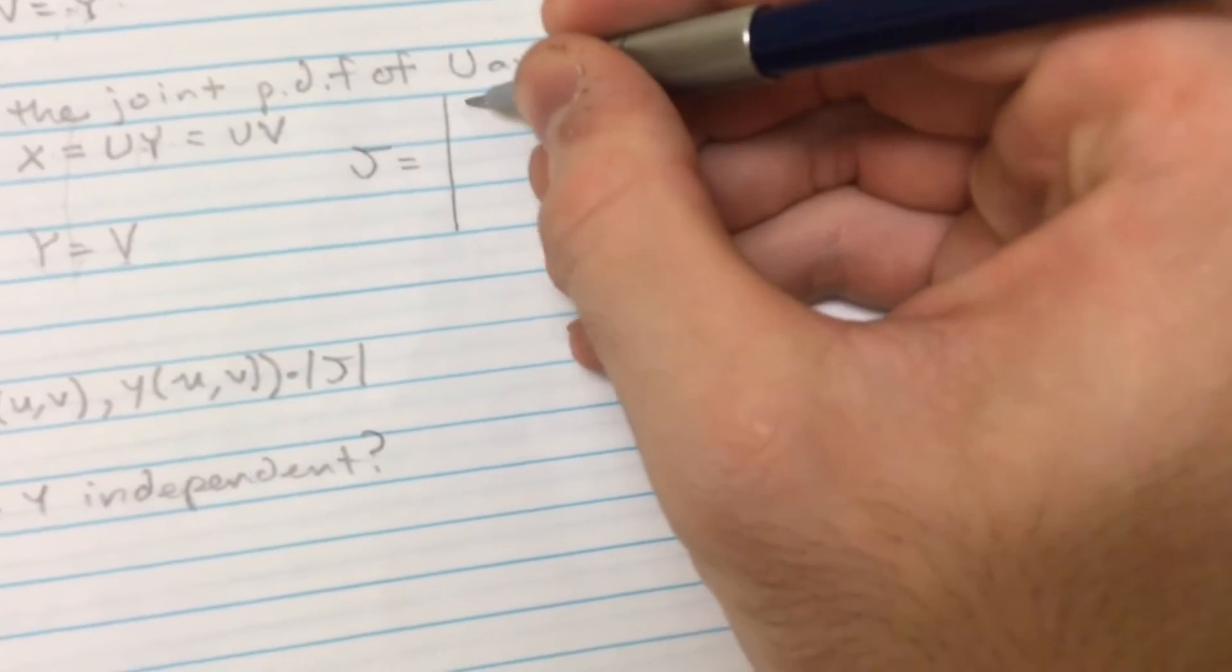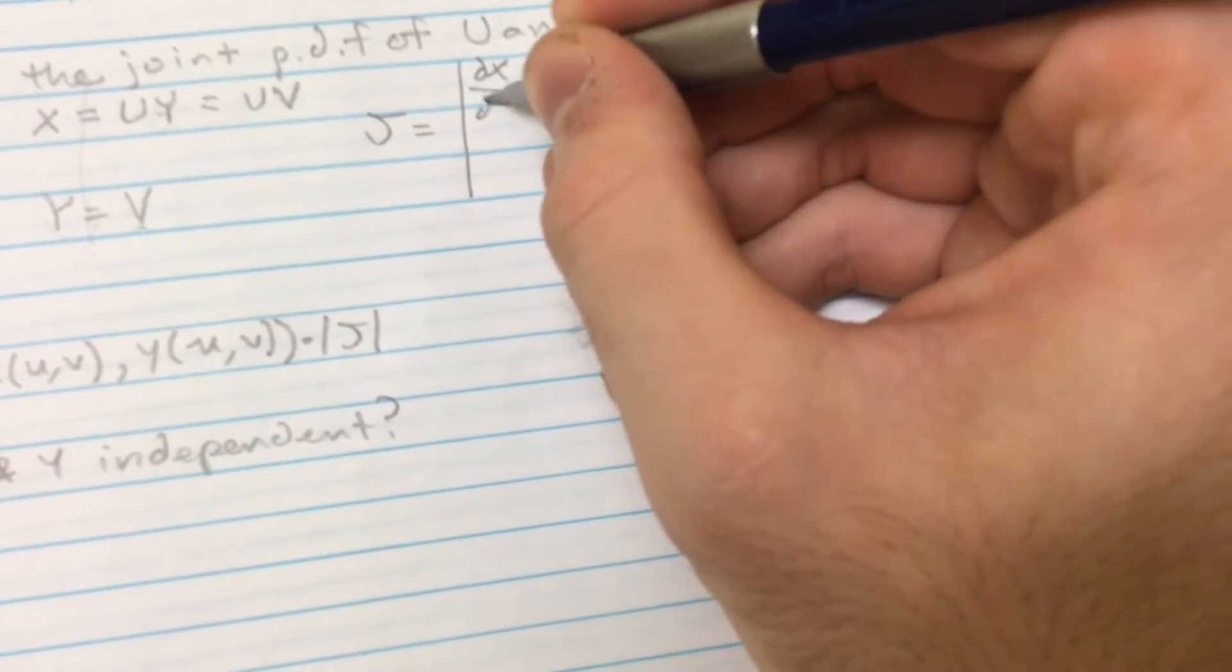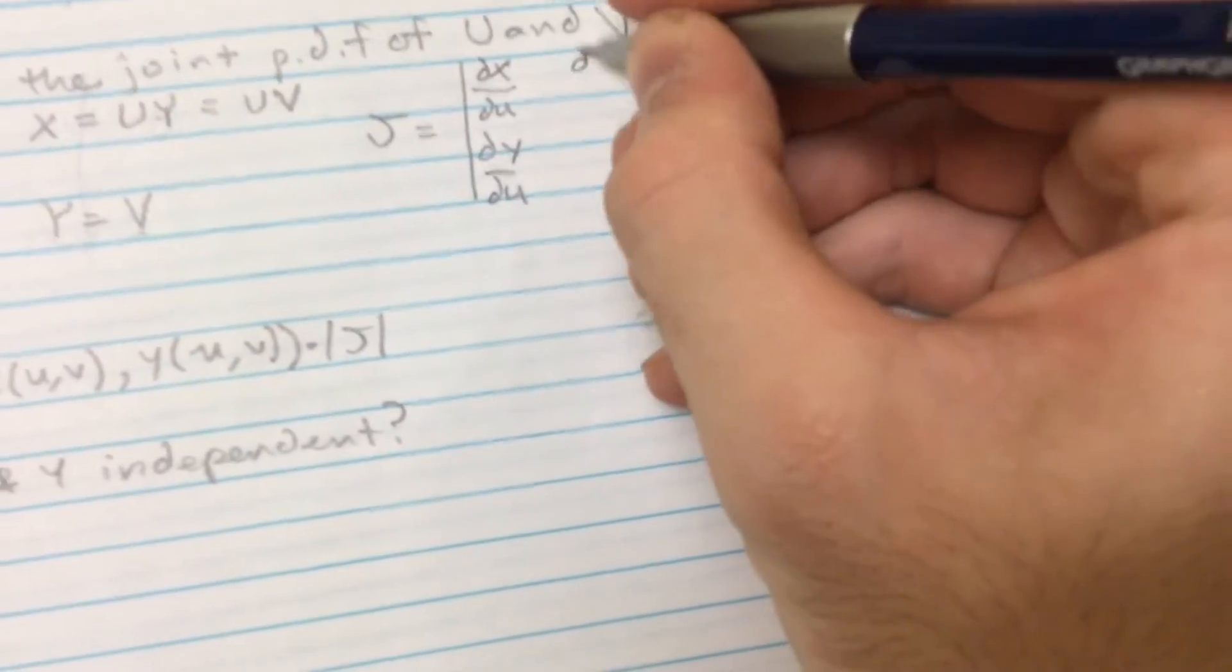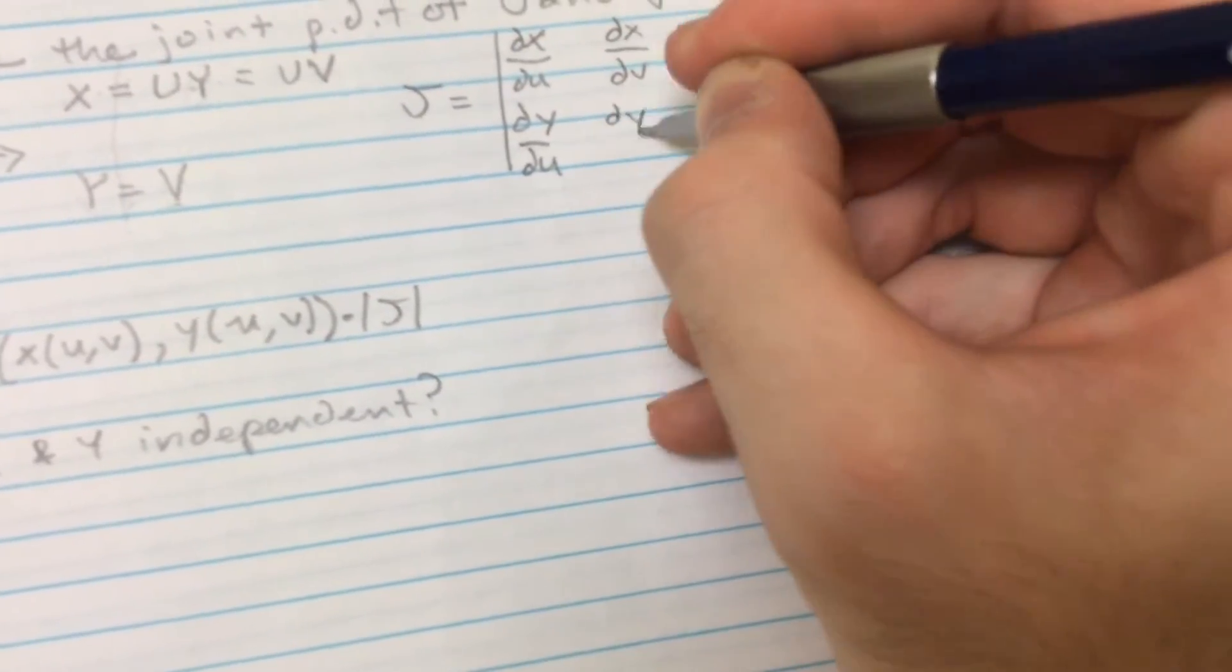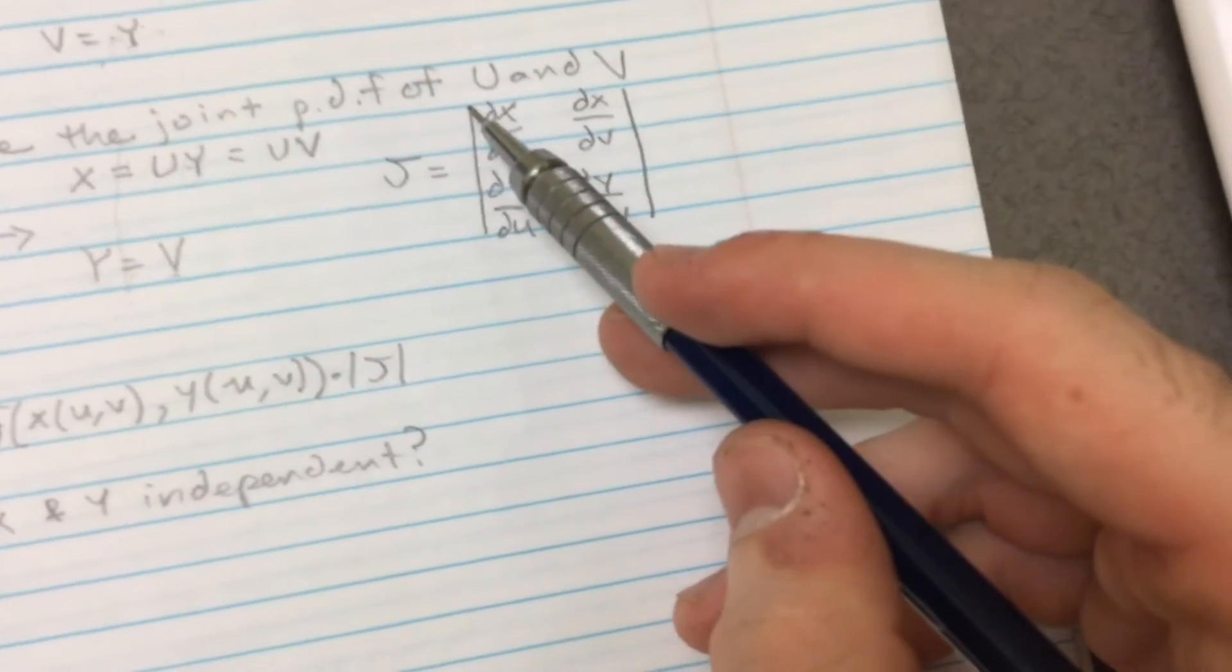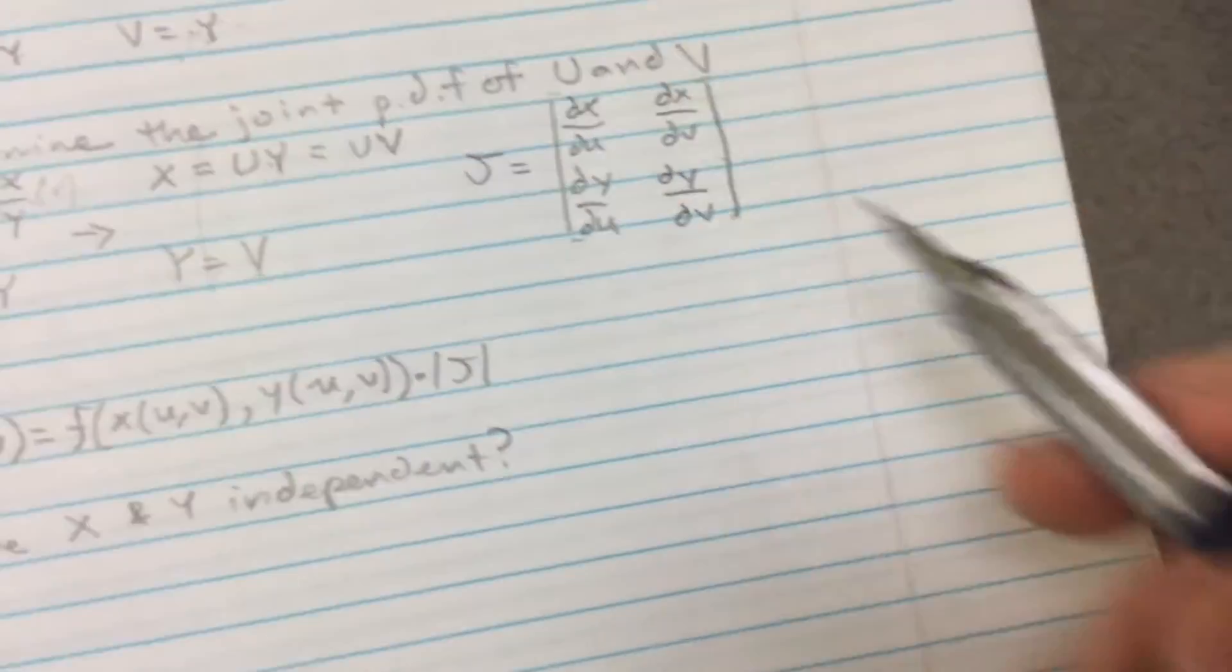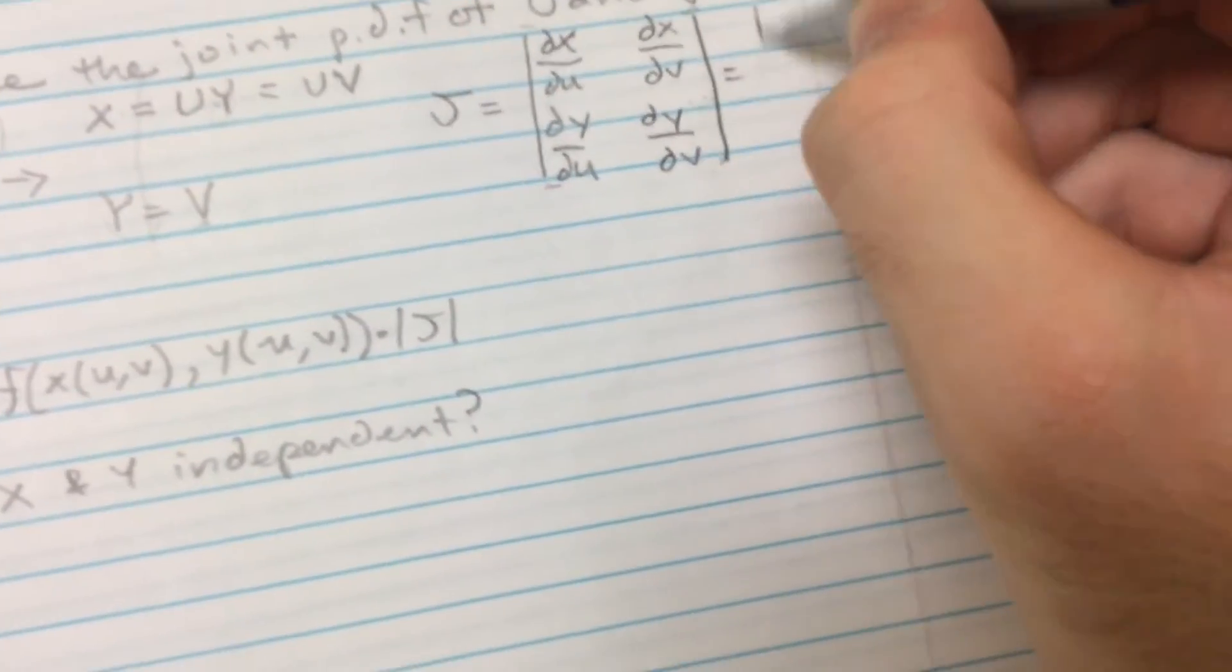So the Jacobian matrix is as follows. It is the partial derivative dx/du, dy/du, dx/dv, dy/dv. And notice that I'm not drawing it as like a matrix, like those little things on the tops here because this is the determinant. So in the very end once we figure out all these we're going to take the determinant of it.